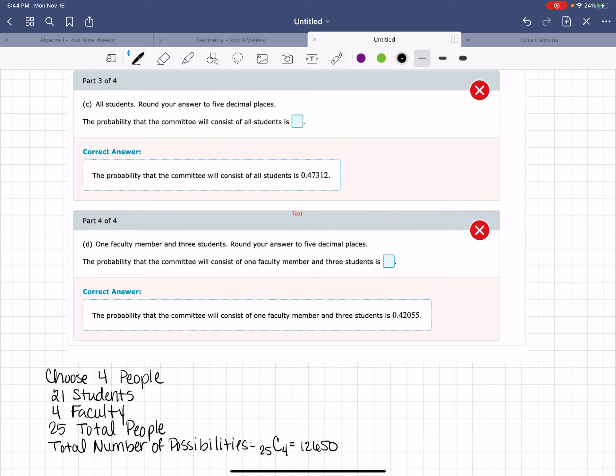Part C asks us if we choose all students. So our part is going to be, we have 21 students. We are going to choose 4. So that's going to give me 21 factorial over 4 factorial times 21 minus 4 factorial.